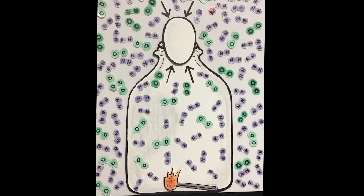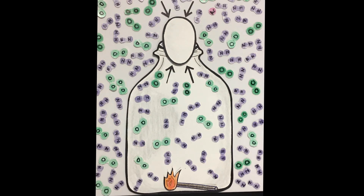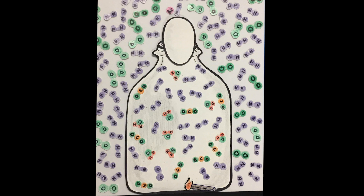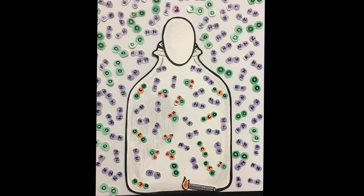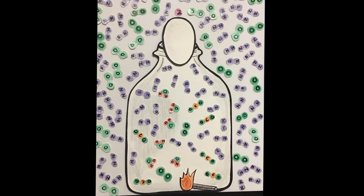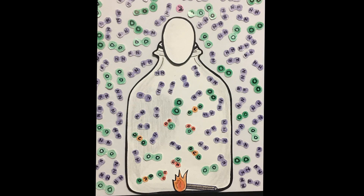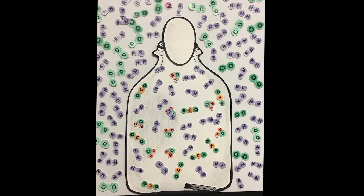After the egg settles down, we can take a look at the chemical change that is occurring with our match. As we learned earlier, wood will burn in combustion as long as there is oxygen present. The problem here is that the bottle has a limited amount of oxygen that gets used up fairly quickly as the match burns. Once the oxygen is depleted, the match will go out.